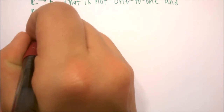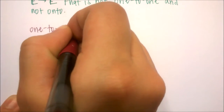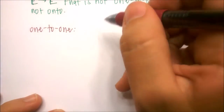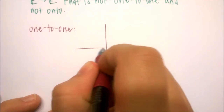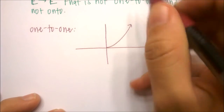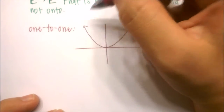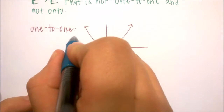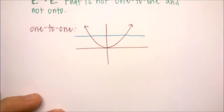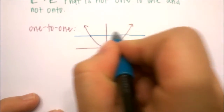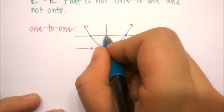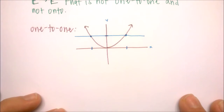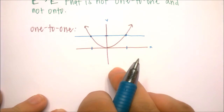To be one-to-one, or to be injective, we know that our mapping or function is going to pass the horizontal line test. So if we look at a function such as f(x) = x², and we look at this rough sketch, we can put a horizontal line through this mapping and see that there are two x values that correspond to one y value. So this function is not one-to-one.